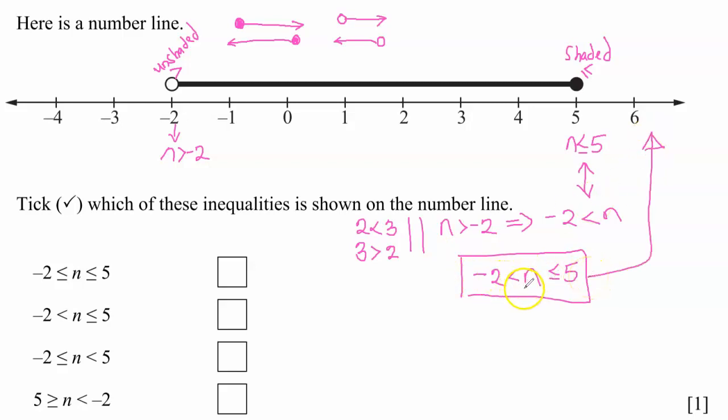This is the representation on the number line. Negative two less than n less than or equal to five. So the next thing is to figure out which are amongst the options. So, of course, it's now option a.